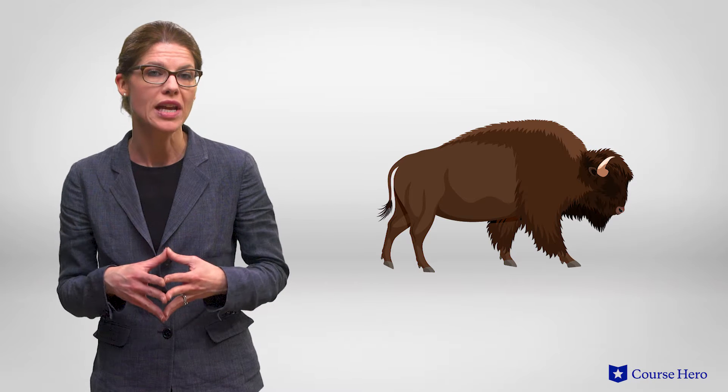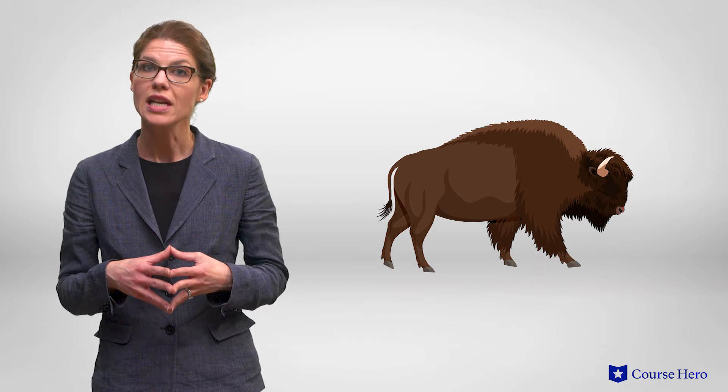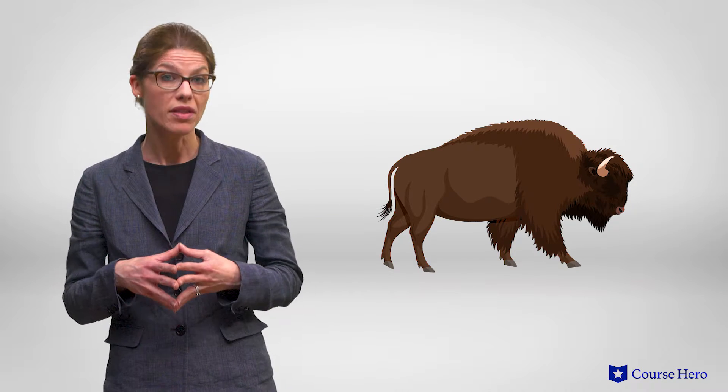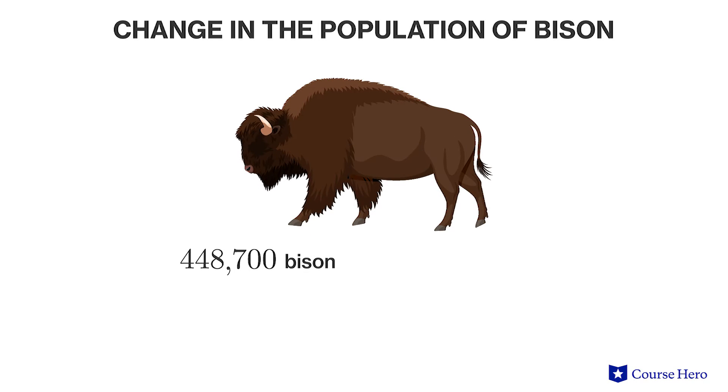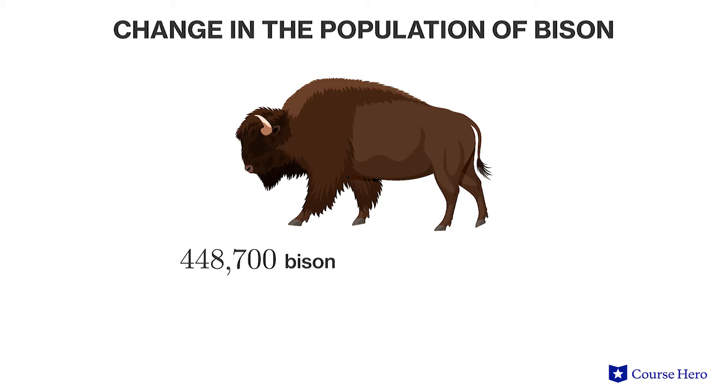In the case of the American bison, the 1888 population of 1,300 increased to 450,000 over a period of 122 years, or 448,700 bison divided by 122 years, which equals a rate of 3,678 bison per year.